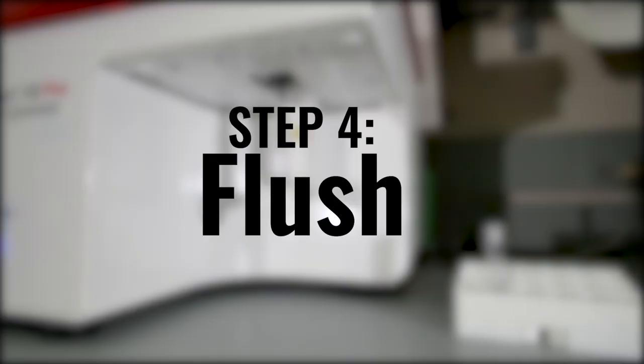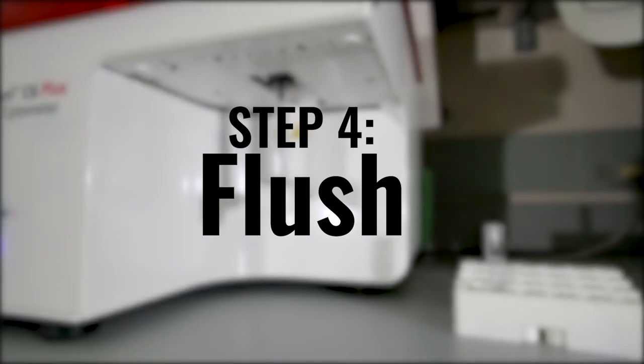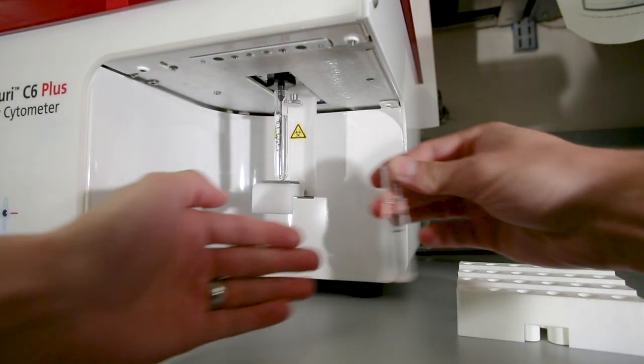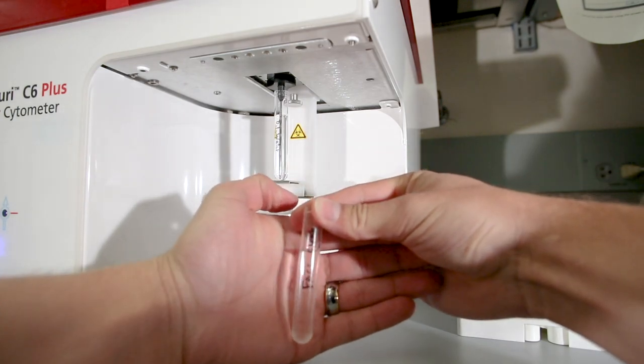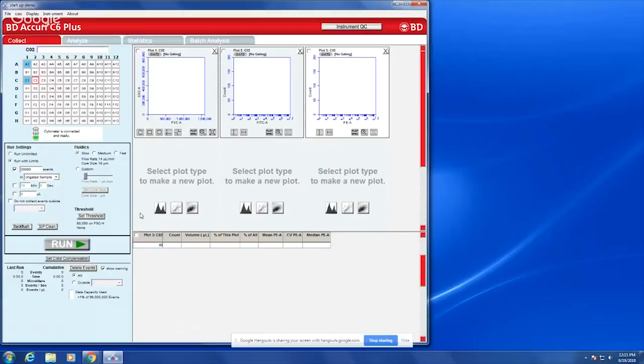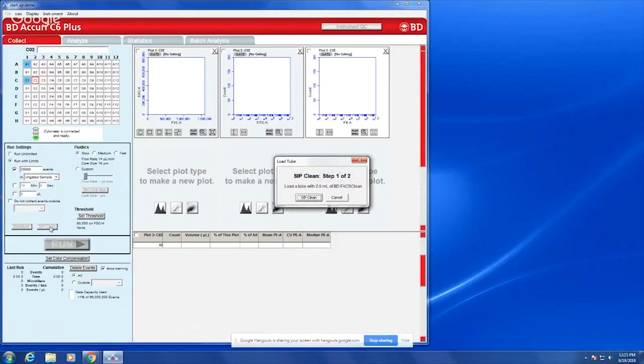Tubes of Fax Clean solution and filtered water should be near the machine. Put at least two milliliters of the solution to run in a clean tube. On the computer, run the sip clean function. It will prompt you to put on a tube of Fax Clean solution for five minutes and then DI water for five minutes.